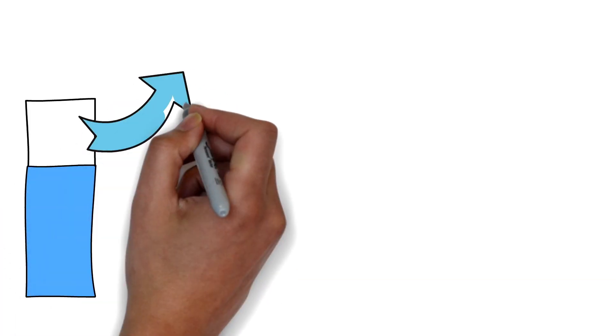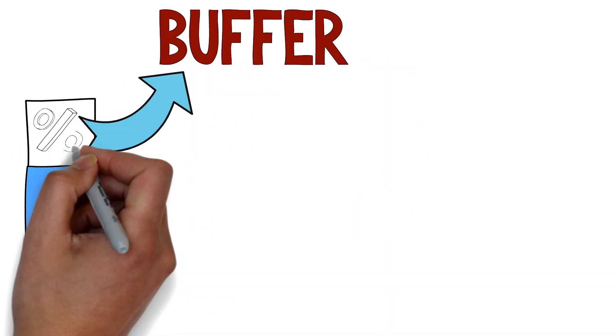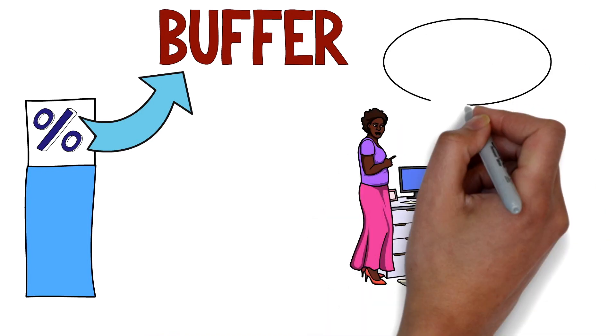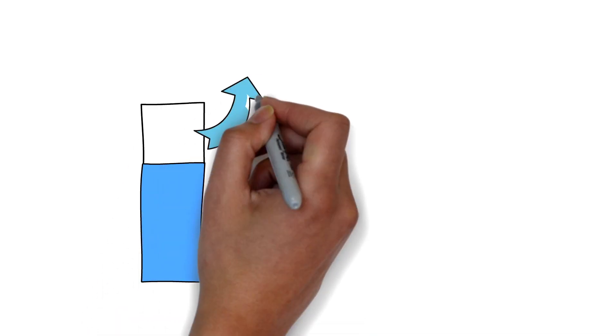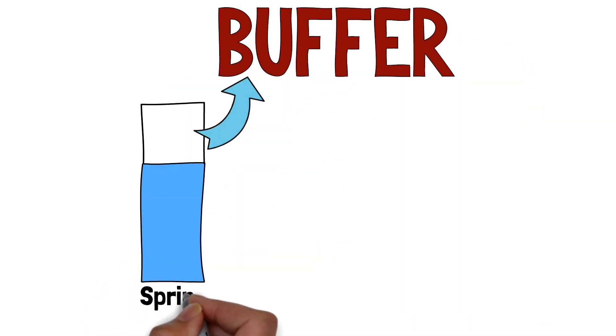There are still growing misconceptions in the market that Scrum is an agile project management methodology and that the sprint in Scrum is just a shorter waterfall. I've already made a video that explains why Scrum is not a project management methodology — click the link up here to watch that video. Some people who use Scrum coming from a project management background put buffers for the project and also for the sprints.